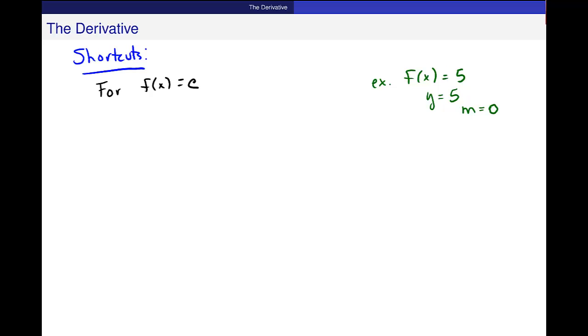We expect and we see that when you take and use this limit definition of the derivative for any constant function, f prime of x is 0. There's no change happening in this function. So that's one of these shortcuts that I'm going to remember.